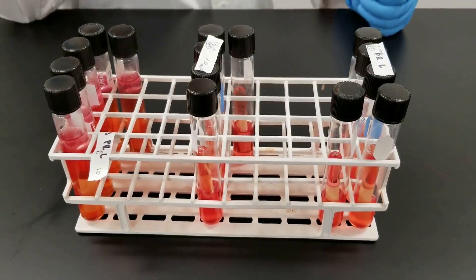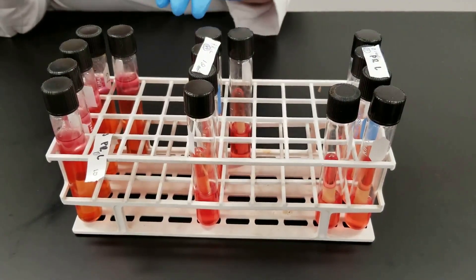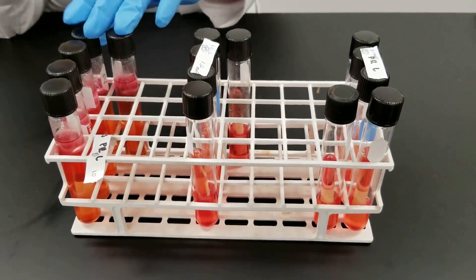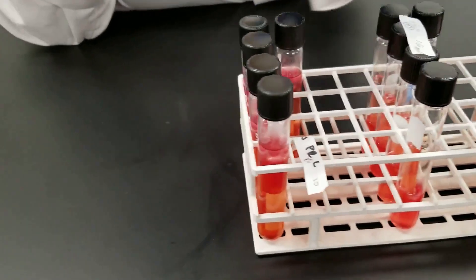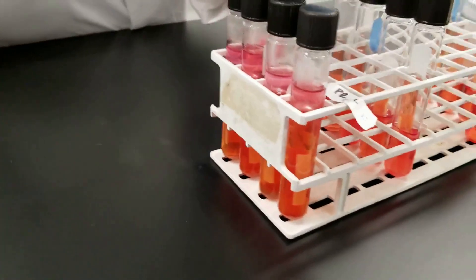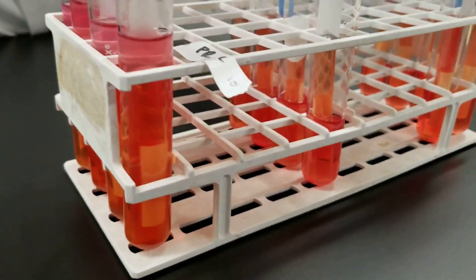In this process, we had five tubes at different concentrations that we added our water sample to. This was a double strength phenol red lactose. All these are lactose. In this first one, we added 10 mils of the sample, then 1 mil, and then 0.1 mil.